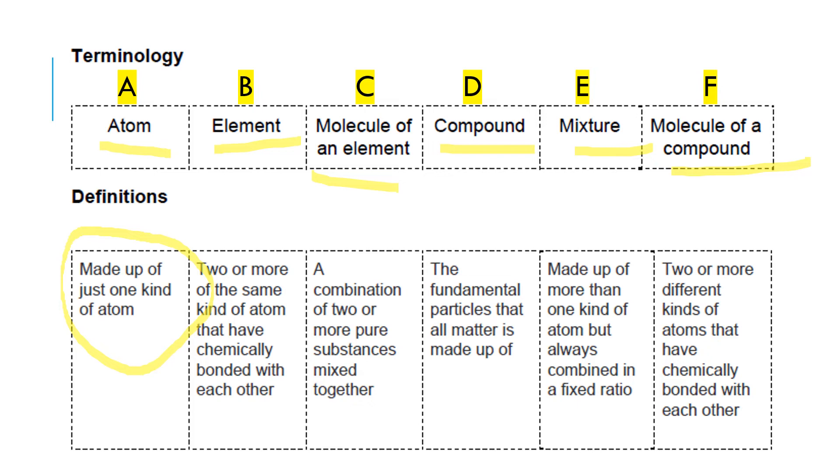Follow the definitions for the succeeding letters. I gave an example: if you use coins, made up of just one kind of atom means the coin you use should be just one. If it's one peso, only peso should be placed or photographed and placed in your documents. Do the same for B, C, D, E, F.